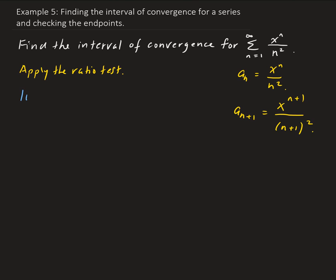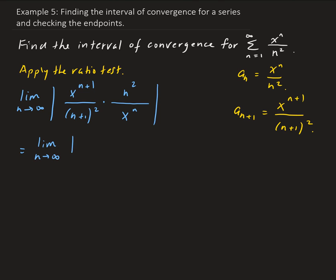We're going to take the limit as n approaches infinity of the (n+1)th term divided by the nth term. Taking the reciprocal, we have n squared up top and x to the n in the denominator. This is equivalent to x to the n plus 1 over x to the n, times n squared over n plus 1 squared.